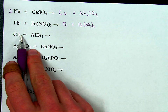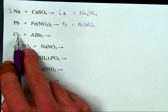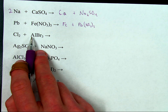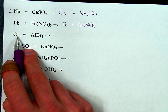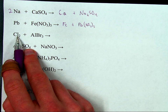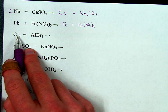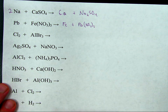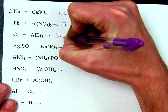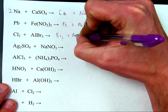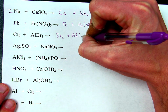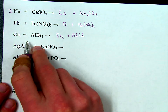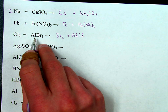Here we'll look at another single displacement reaction — you have an element reacting with a compound. In this case, the element is chlorine, which takes a negative charge. This means it's going to switch places with the negative part of this compound, which is the bromine. That means bromine will now be by itself, and chlorine will be with the aluminum. Step one: switch the pieces.